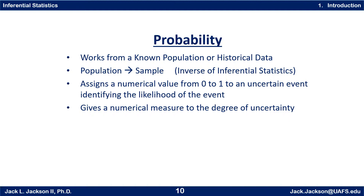Probability works from a known population or historical data — it works from a population to a sample. Probability takes information from the structure of that known population and tells us how likely we are to obtain a specific sample from the population. In this sense, it's the inverse of inferential statistics. Probability assigns a numerical value from 0 to 1 to an uncertain event, identifying the likelihood of the event and giving a numerical measure to the degree of uncertainty.